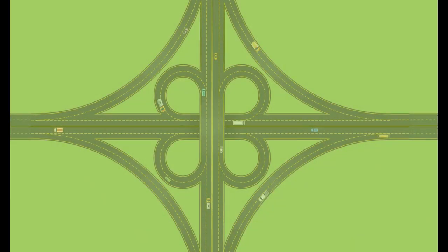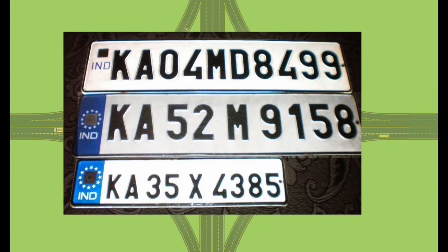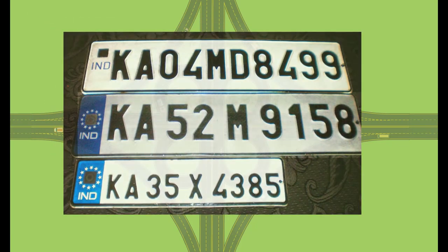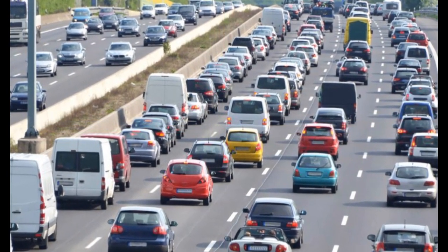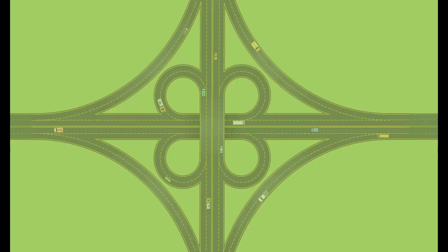Registration Number Plate Survey involves the survey of the registration numbers of vehicles entering or leaving a survey point located on the cordon line. By matching the registration numbers of vehicles, the points of entry and exit from the area, one is enabled to identify two points on the path of the vehicle.